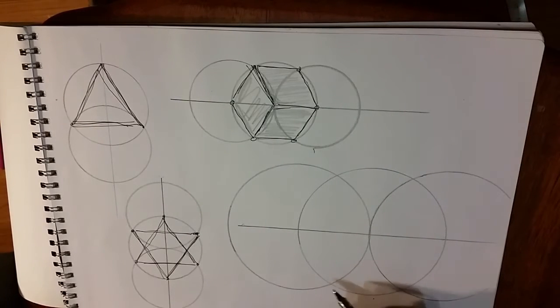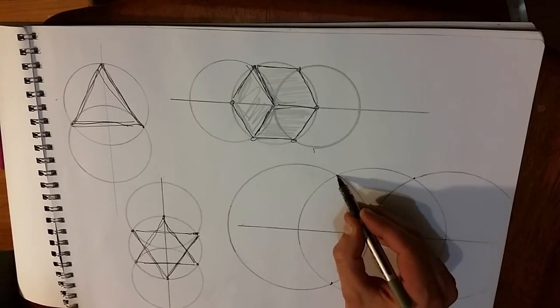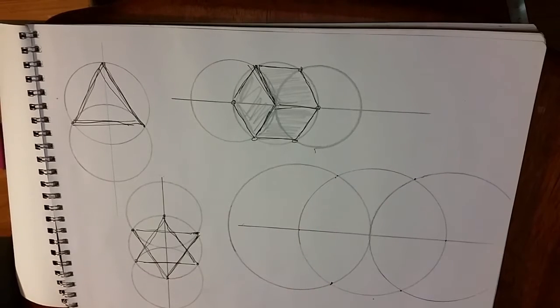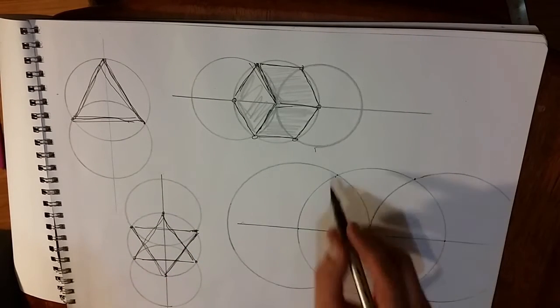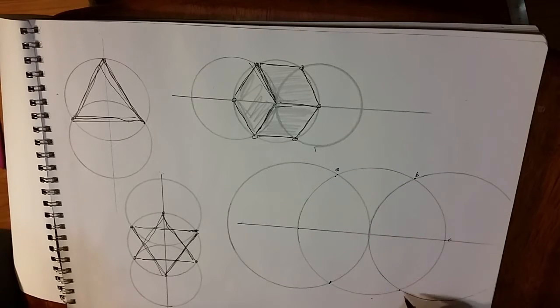So again we have one, two, three, four, five, six, and now I'm going to label them A, B, C, D, E, and F.